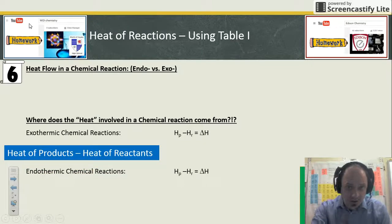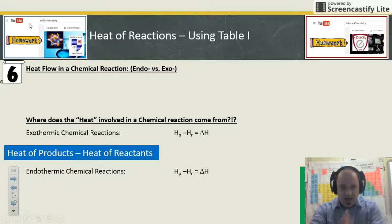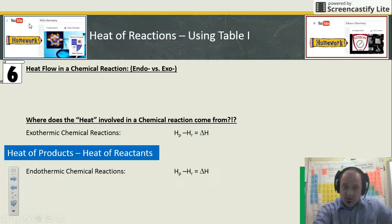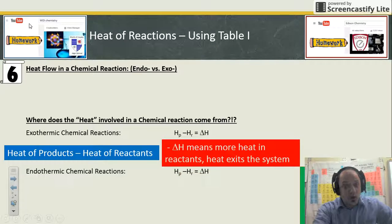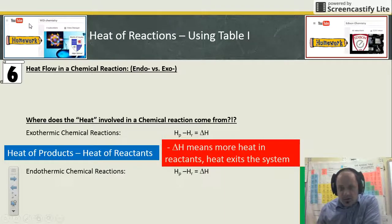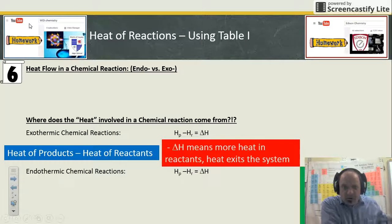In an exothermic chemical reaction, the way we figure out delta H is we always subtract the heat of the products from the heat of the reactants. Delta H means more heat in the reactants and the heat exits the system. If the products have less heat than the reactants did, some heat must have left.